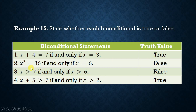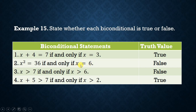Number two: x² = 36 if and only if x = 6. These equations are true for x = 6, but when x = −6, the first equation is true but the second is false. Thus the equations have the same truth value only for some values of x; hence the bi-conditional statement is false.